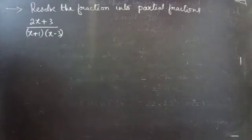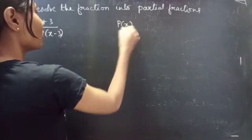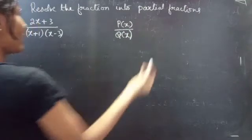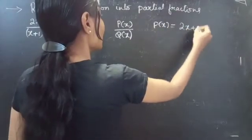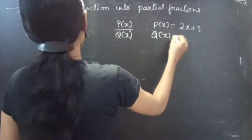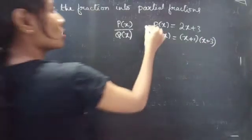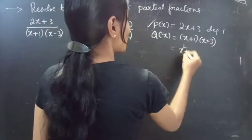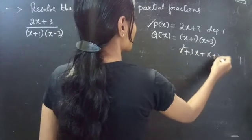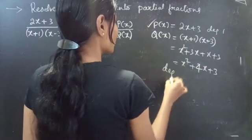We have to check whether the given fraction is a proper one or an improper one. We consider the total fraction as P(x) by Q(x). Here P(x) equals 2x plus 3 and Q(x) equals x plus 1 into x minus 3. Expanding Q(x): x squared plus 4x plus 3. So the degree of P(x) is 1 and the degree of Q(x) is 2.